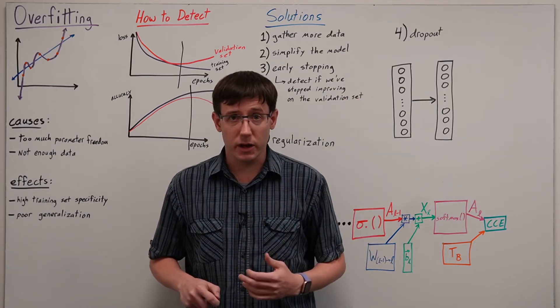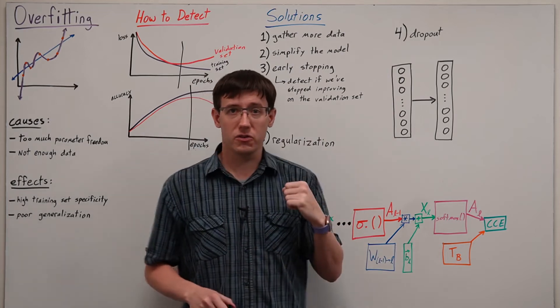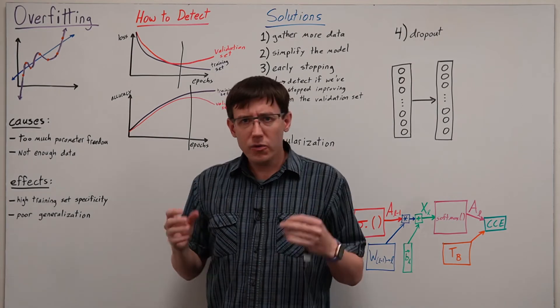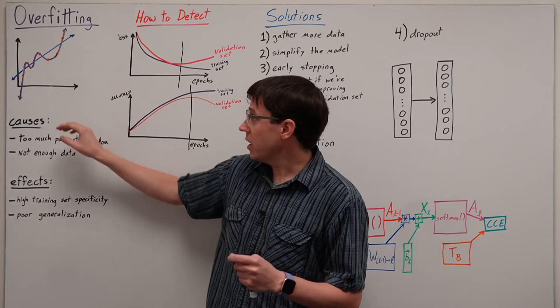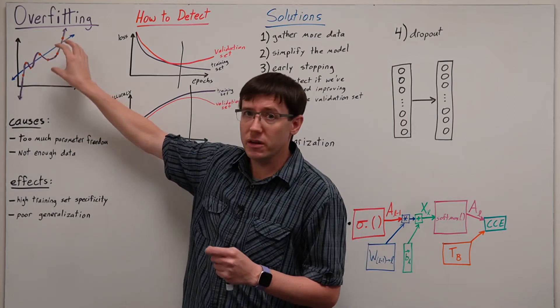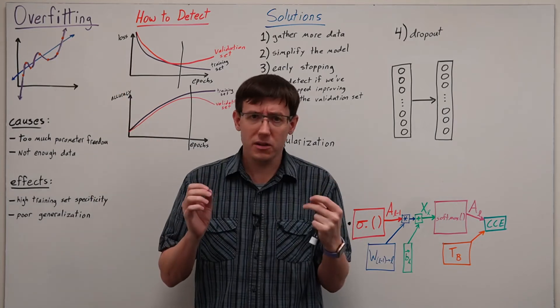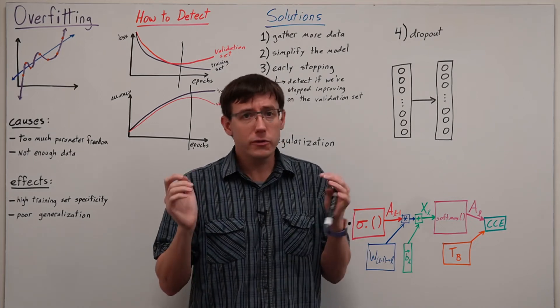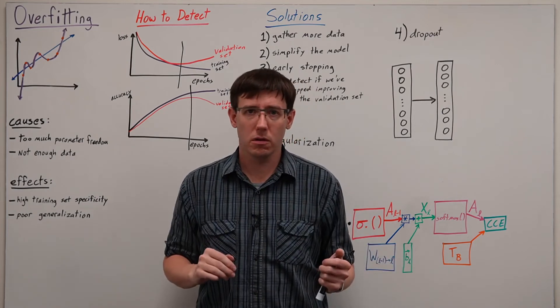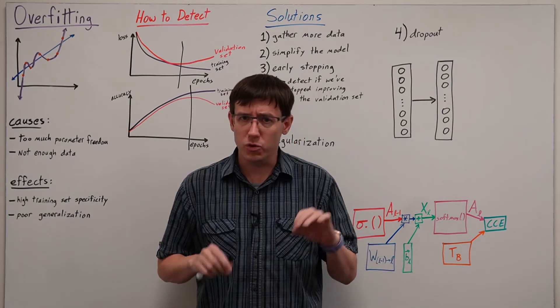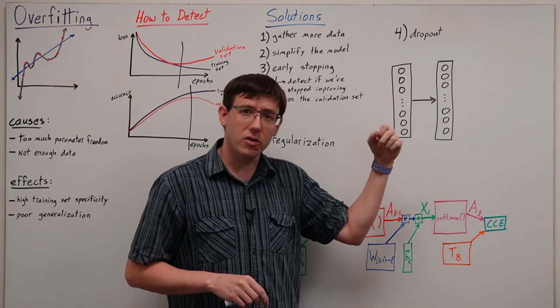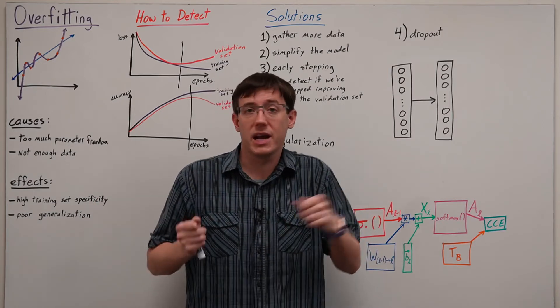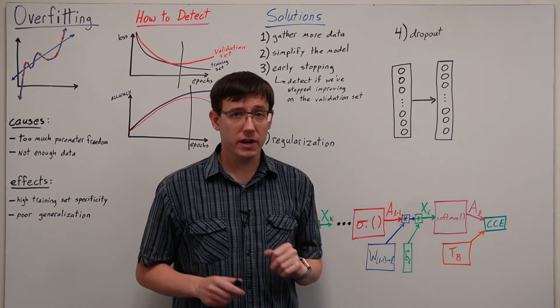But there are also more advanced techniques we can use, and to motivate dropout and regularization, it helps to think about what's going on in a neural network when it overfits. Well, we know that overfitting means that a model is becoming overly specific to its particular sample of training data. And in a neural network that means that our weights are becoming overly specific, and that individual points are having too big of an effect on the network's activations. And so one potential solution would be to directly combat this by getting rid of particular parts of a data point, or particular nodes in the network, to prevent them from having an outsized effect.